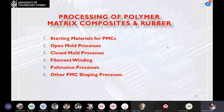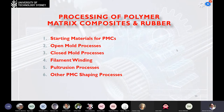Now we go back to the second part of the lecture, which is the processing of the polymer matrix composites and the rubbers. We're going to talk first about the study materials for the PMC, then the open mold processes, the closed mold processing, the filament winding, the pultrusion processes, and other PMC shaping processes.